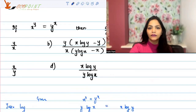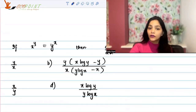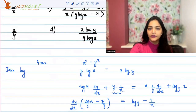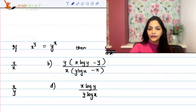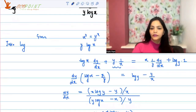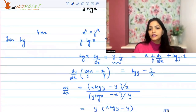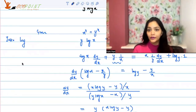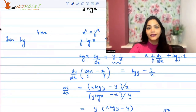Let's verify with the options. Option B: y multiplied by (x log y minus y) in the numerator, and x multiplied by (y log x minus x) in the denominator. Yes, that matches. So B is the correct option. I hope you got the answer right by yourself as well. Thank you very much, I hope this helps.